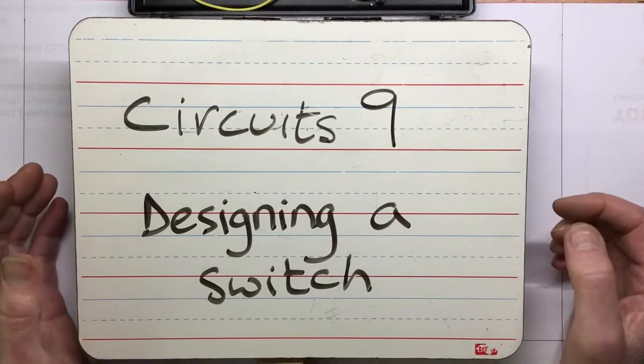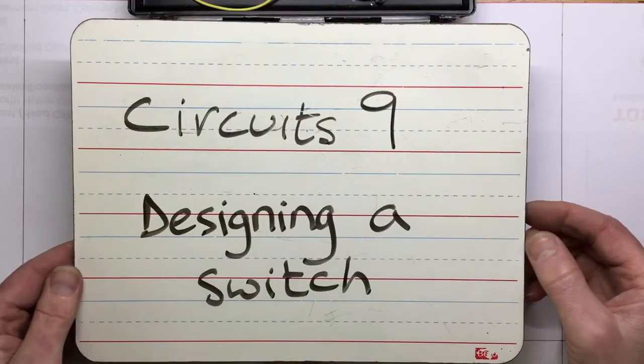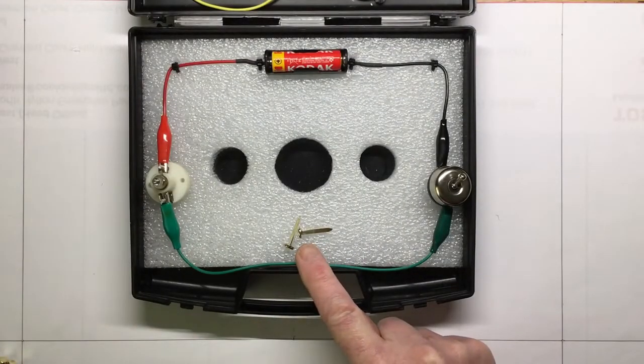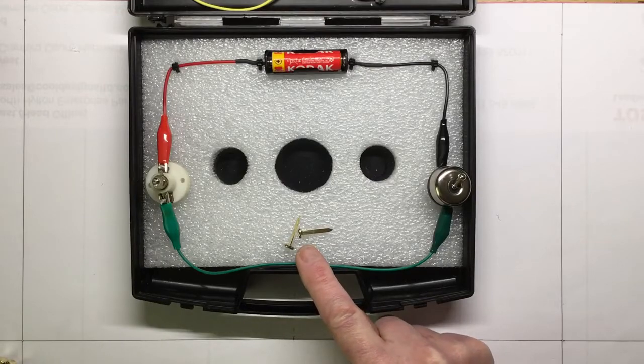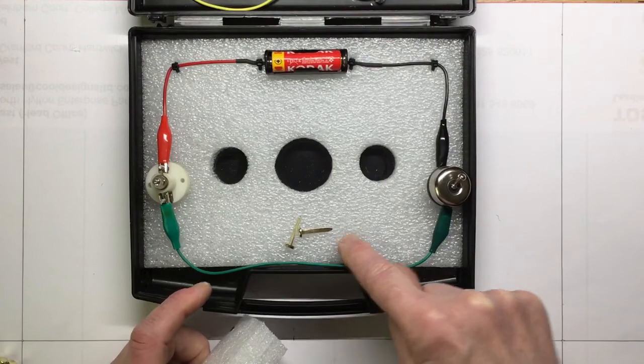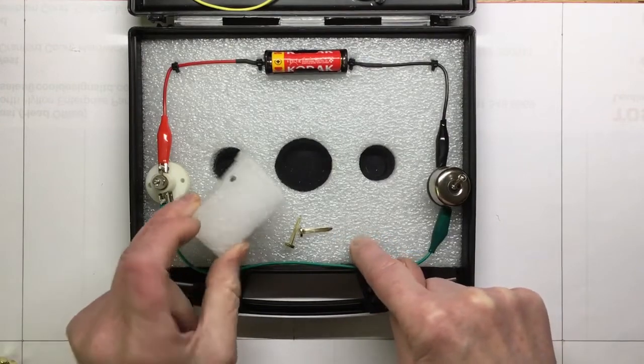Okay, let's design a switch from some very simple materials. We've got a few paper fasteners and a piece of foam. Now the backing of these circuit boxes is the same foam anyway.